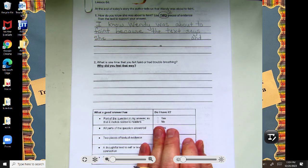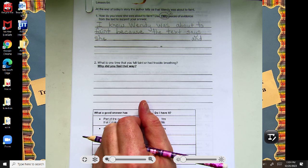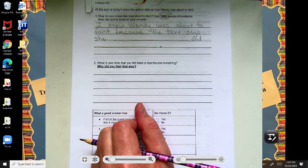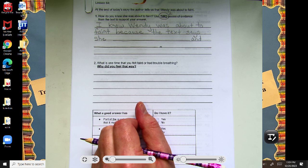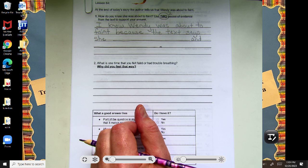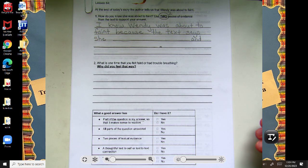So, what are two things that you read in the text, in the story today, that tell you that she was about to faint? What did we read that lets us know that was coming? What was happening with her that lets us know she was feeling faint?